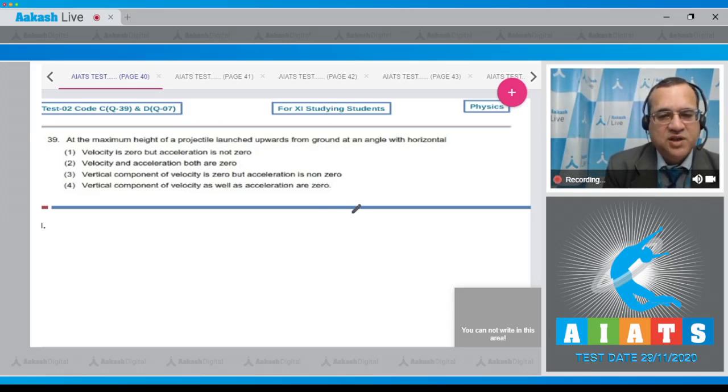At the maximum height, the projectile is launched from here with certain angle to the horizontal and when it is at the highest point, it is moving horizontally. So its vertical component velocity is 0 but the acceleration due to gravity is present. The vertical component of velocity is 0 but the acceleration is non-zero is the correct answer, option 3.